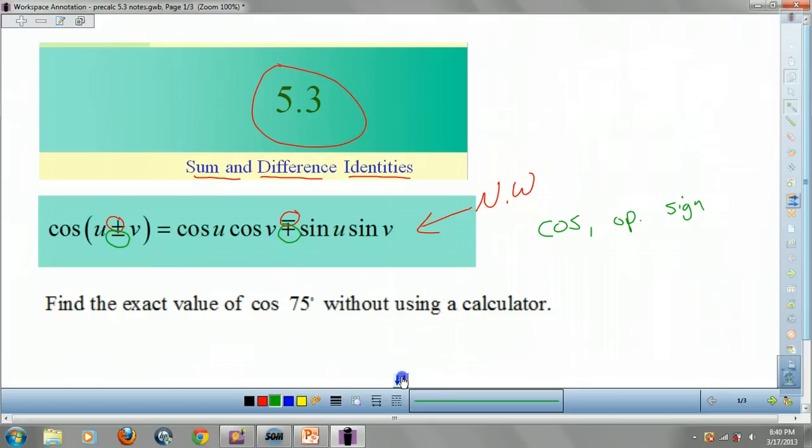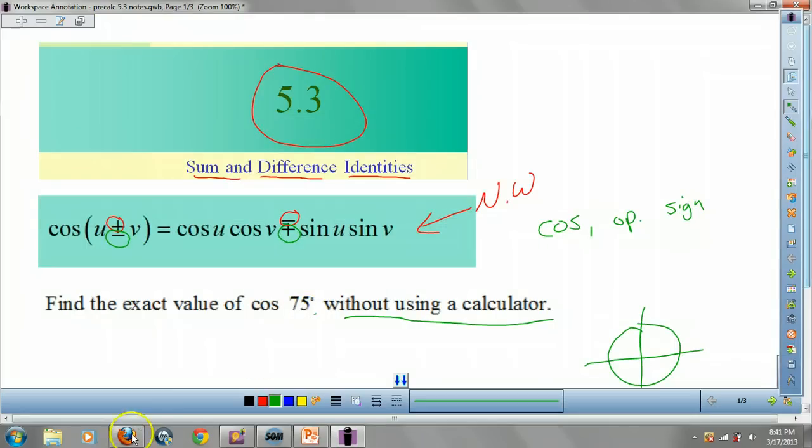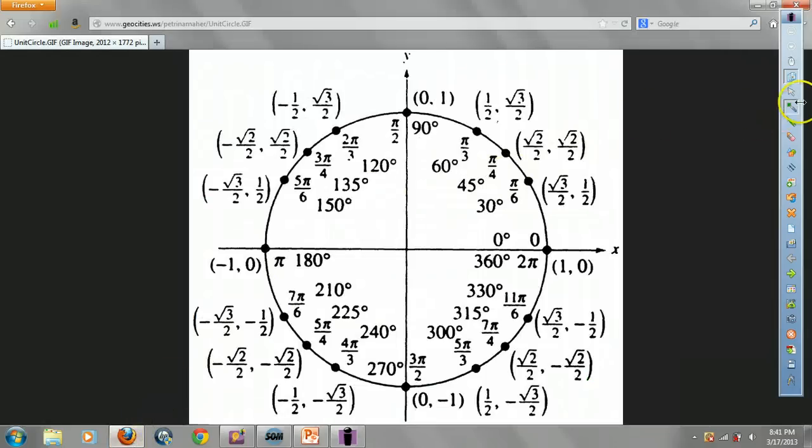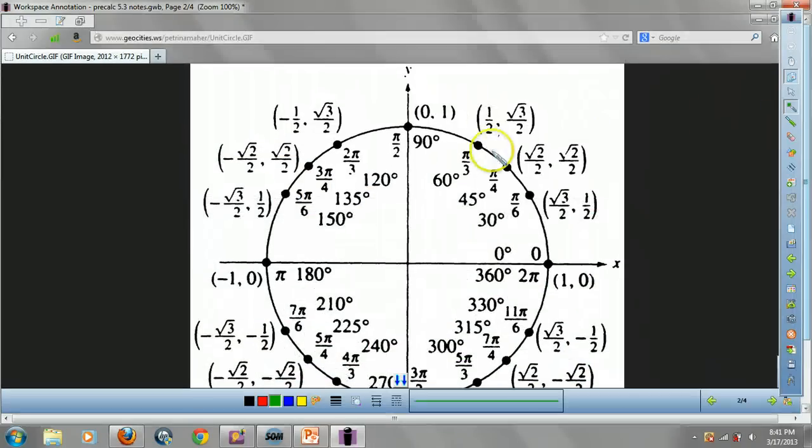Let's take a look at this. Find the exact value of cosine of 75 degrees without using a calculator. Well, we've got to use our unit circle, guys. In fact, let's see if I can't pull up a unit circle. Okay, let's take a look. Well, when I look at this guy, there's no 75 here, right? No 75 degrees. If I have a 60, right? All right, but that doesn't help me.